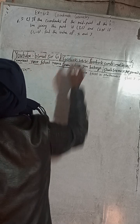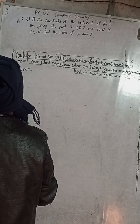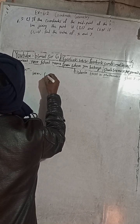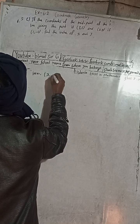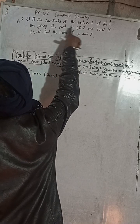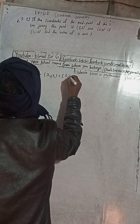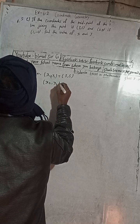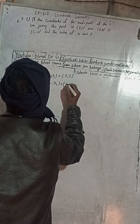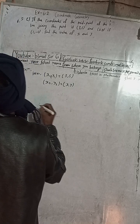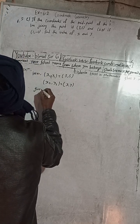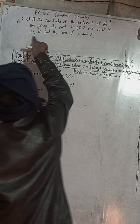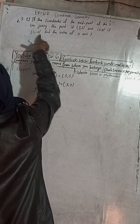Here we can write x1 comma y1 is 3 comma 5, and x2 comma y2 is x comma y. The given midpoint — if the coordinates of the midpoint of the line joining these two points is this — so this is the given midpoint.